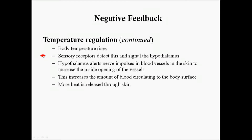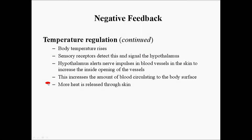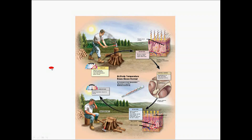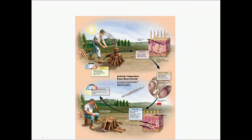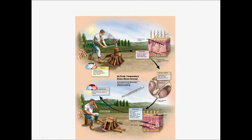The opposite occurs if body temperature rises. Sensory receptors detect it and signal the hypothalamus, which then sends signals to the effectors. In this case, instead of vasoconstricting, the effectors vasodilate — they increase the inside opening of the vessels. This allows more blood to circulate to the body surface so more heat is released through the skin. Here is a figure showing this process: the stimulus is the increase in temperature, receptors detect it, the signal is sent to the hypothalamus as the control center, integrated and sent to the effectors causing vasodilation, more heat is released, and homeostasis is restored.